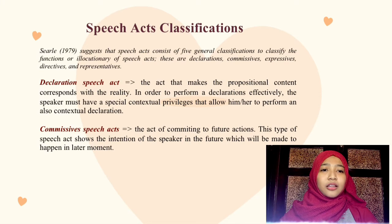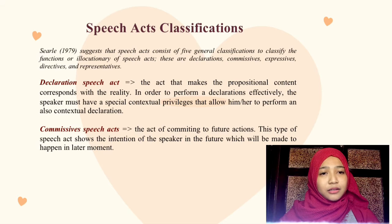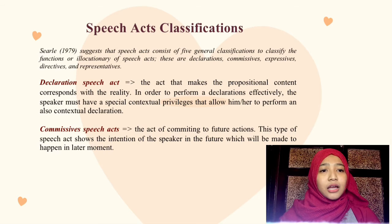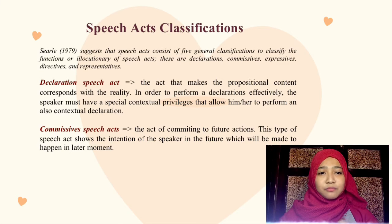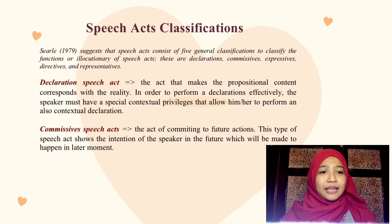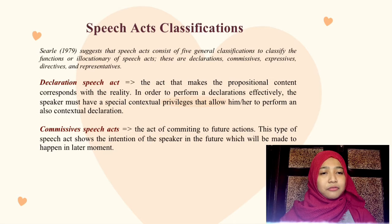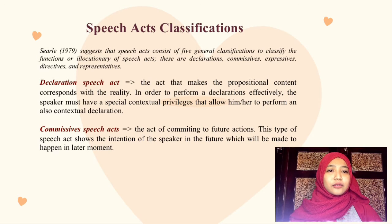For example, when a priest says 'I pronounce you husband and wife,' the priest in the context of marriage has the privilege to pronounce marriage, and when this utterance is performed, the man and woman are then changed from singles into married people. On the contrary, if the speaker is not a priest or does not have the privilege to marry people, the utterance will not be effective.